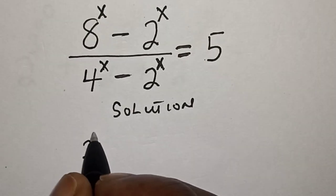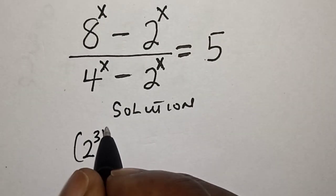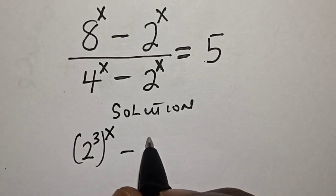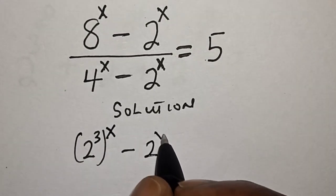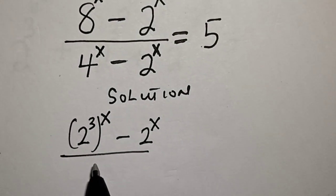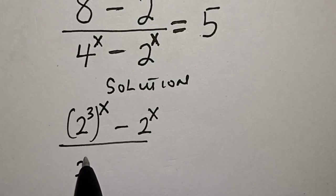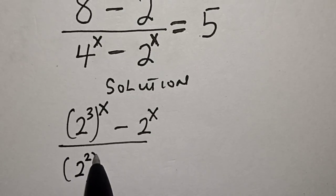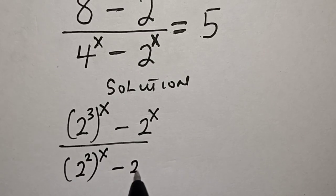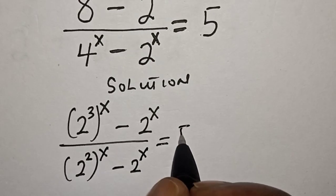Solution: 8 raised to power x can be written as 2 raised to power 3, raised to power x, minus 2 raised to power x, divided by 4 raised to power x — completing as 2 squared raised to power x — minus 2 raised to power x, is equal to 5.